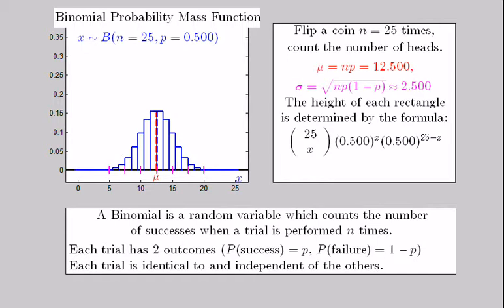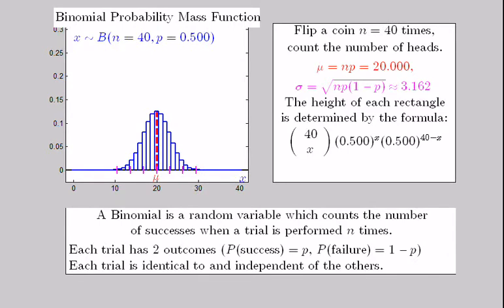The center of each distribution is called the mean, or expected value of x, which is shown in red and denoted mu. For a binomial, the mean is n times p, and its standard deviation, sigma in pink, is the square root of n times p times 1 minus p.